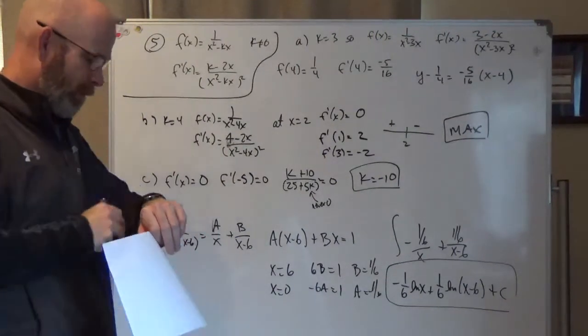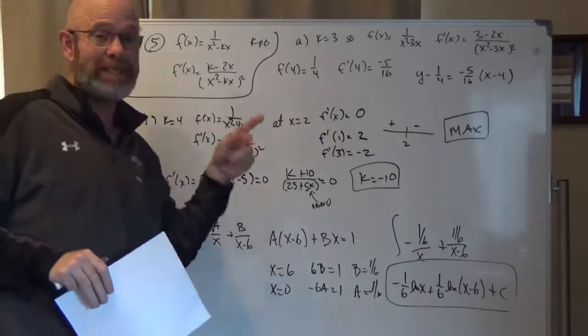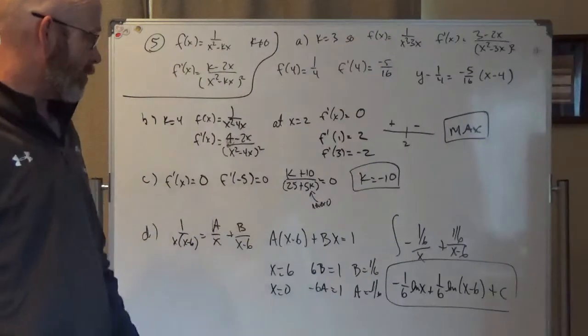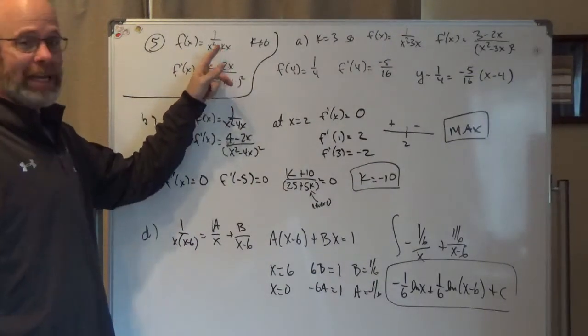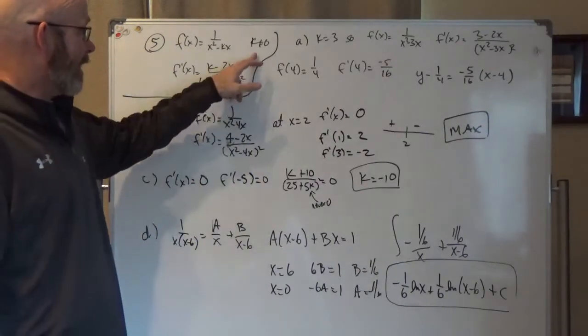All right, problem number five on 27b. A little different problem for sure. They give us this function with a k in it and they give us the derivative, which is nice of them to do that. They tell us k is not zero.